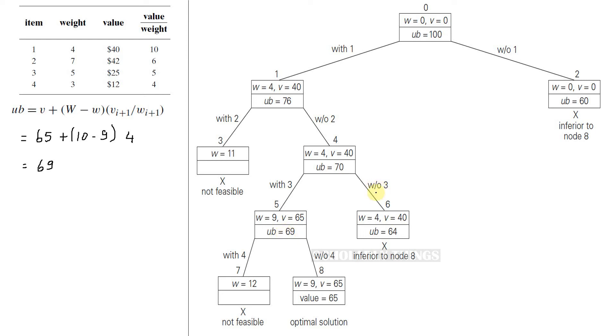The other option is to exclude item 3. If we exclude item 3, it means that we are taking only item 1. So the upper bound will be value 40 of item 1 plus 10 minus weight of item 1 is 4, into value by weight ratio for next item is 4. So the upper bound will be 40 plus 6 into 4, 40 plus 24, which is 64. When we compare, node 5 has larger upper bound. So let's consider that and branch out.